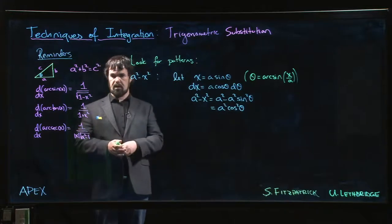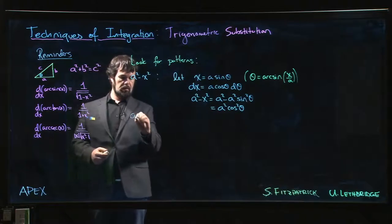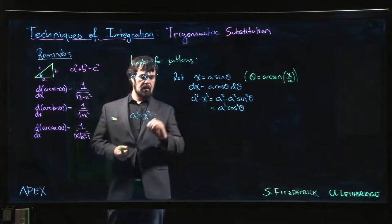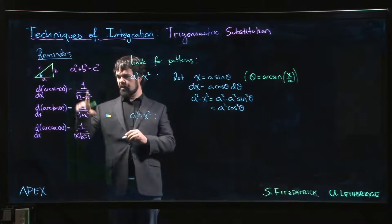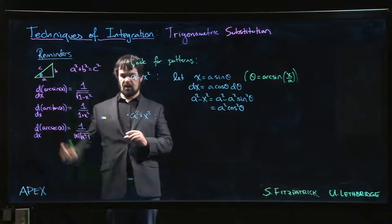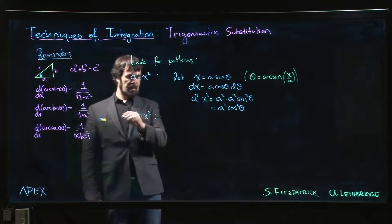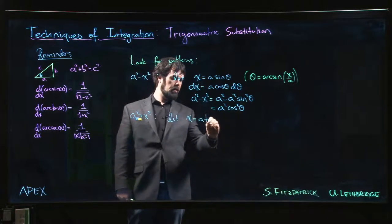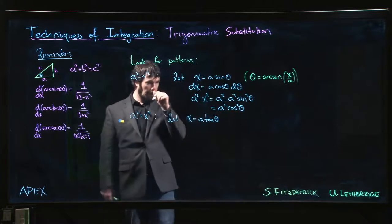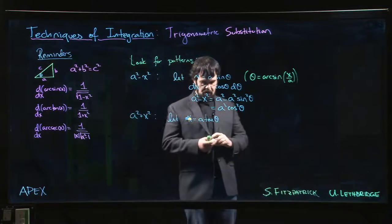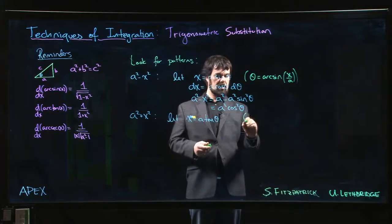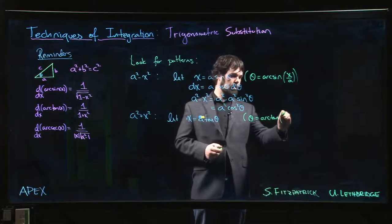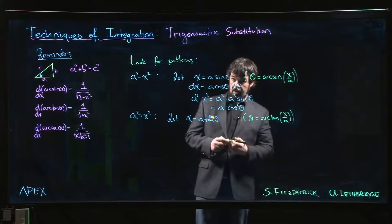For arc tan, we're going to see a pattern that looks like a squared plus x squared. And so if we have these in mind, these patterns suggest which trig function we should pick. If we have a squared plus x squared, we should try letting x equal a tan theta. And what we really mean here is that theta is arc tan of x over a.